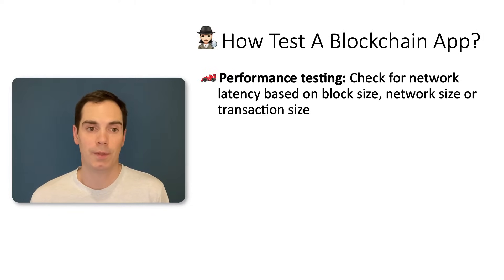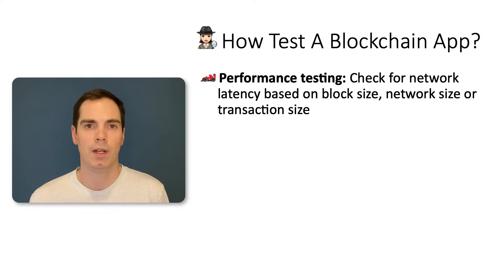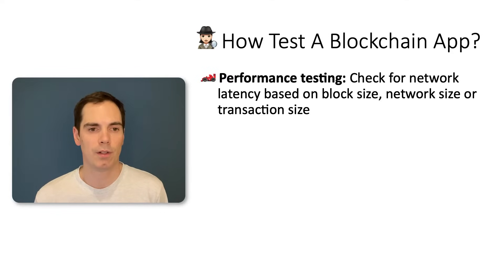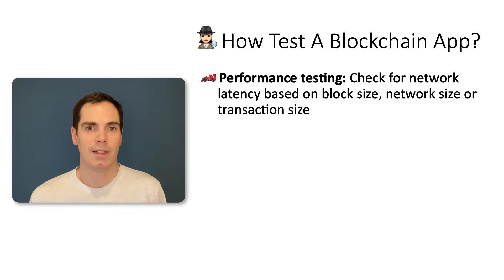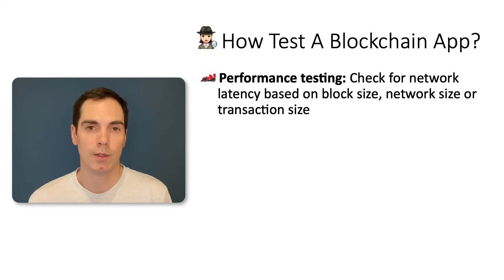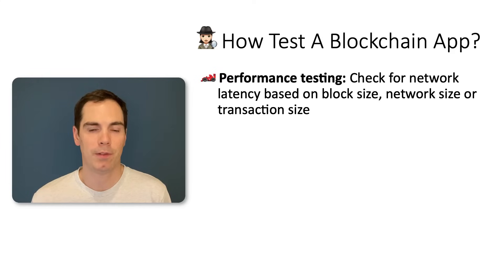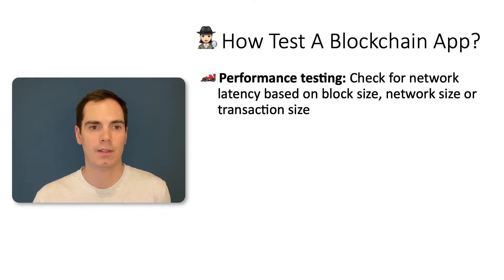Performance is one of the key things to check when doing blockchain testing. The focus is rather on non-functional testing methods. You should check the network for latency and network speed, because there's latency based on the block size, network size, or transaction size. This has a huge impact: if it's too low, the transaction takes too much time or will be canceled. Performance is important for blockchain applications, just as it is for other products we test daily.